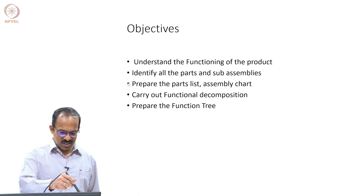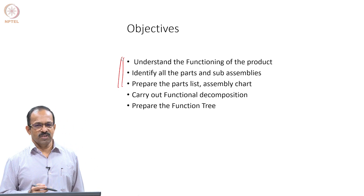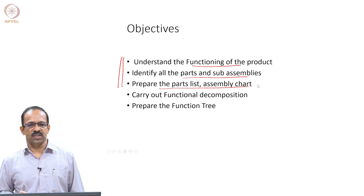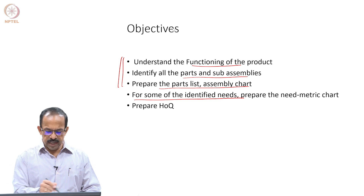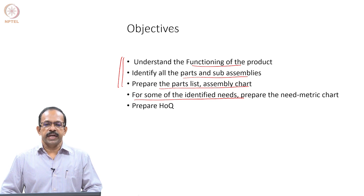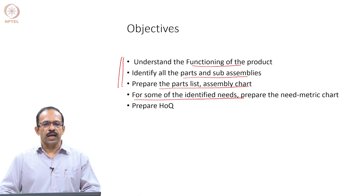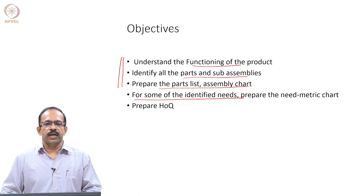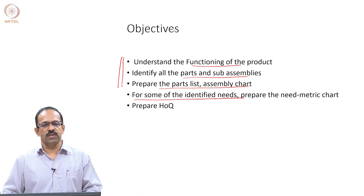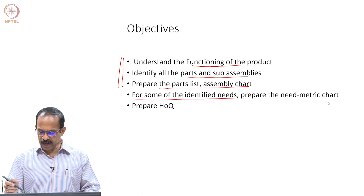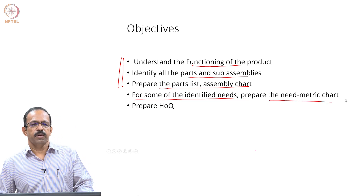The objectives, as in the previous cases, the first three will be the same: the functioning of the product parts, the parts list, and the assembly chart. Then for some of the identified needs, you prepare the need-metric chart. You need to identify the metrics corresponding to each need and then prepare a need-metric chart showing the dependency of these metrics with the needs — whether there is a strong relation or a weak relation needs to be identified.